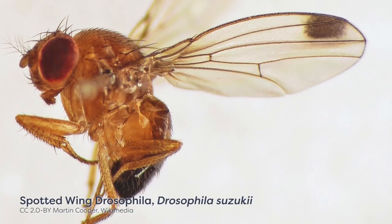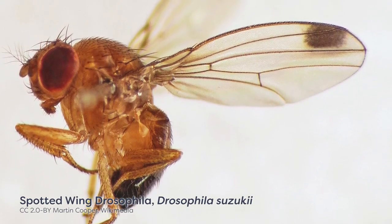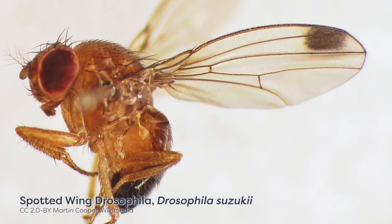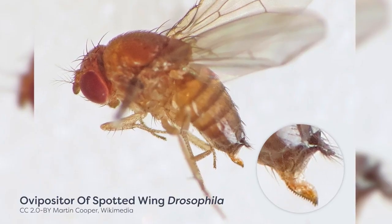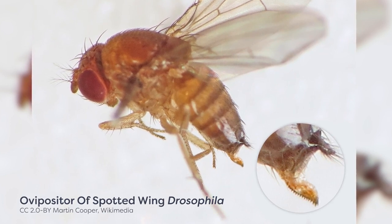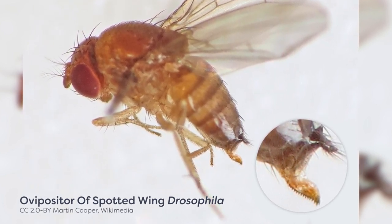A different invasive insect, the spotted-winged fruit fly Drosophila suzukii, has become the scourge of berry production in North America and in some parts of Europe. Most fruit flies are considered nuisance pests of overripe and spoiled fruits. Females of the spotted-wing Drosophila, however, have a serrated ovipositor that can cut into young fruit so that the fly can lay eggs inside of ripening berries.